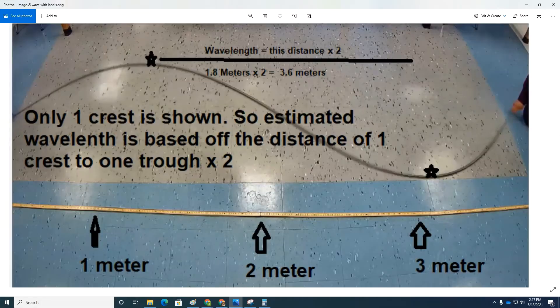This first wave is so big you can't see the entire wavelength crest to crest in the image. Instead, we measure from crest to trough and multiply that distance by two to get the full wavelength.